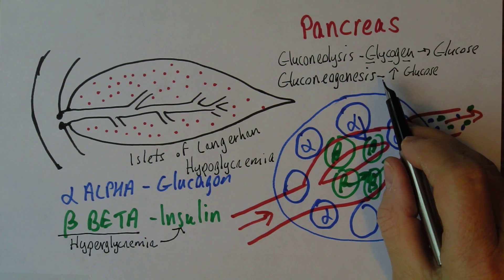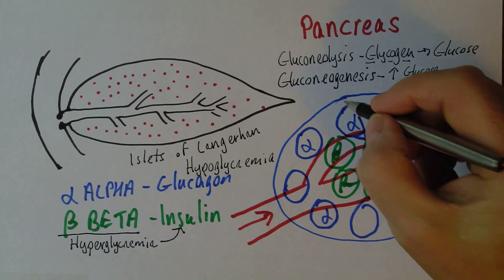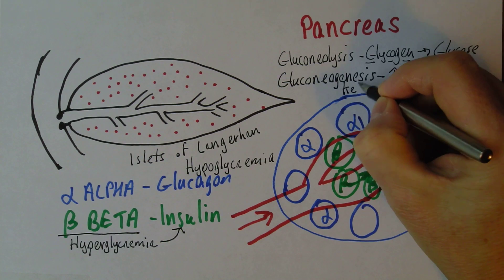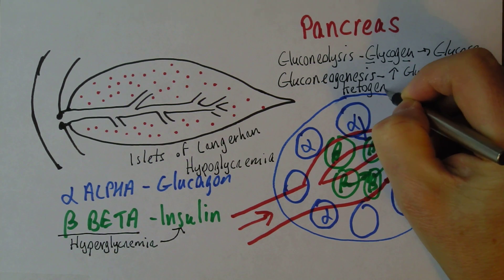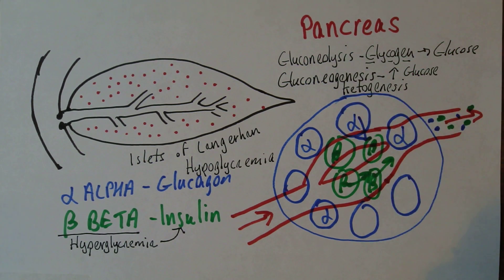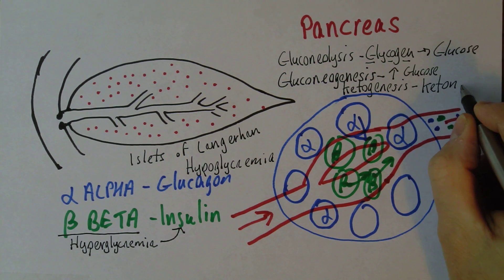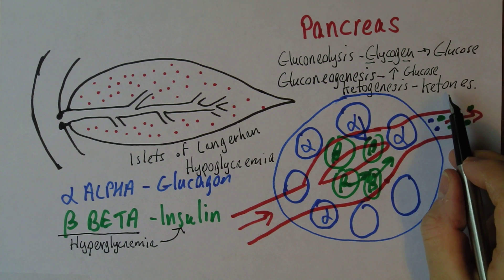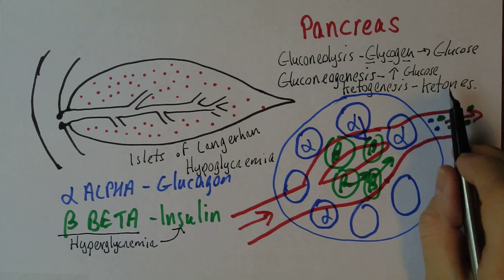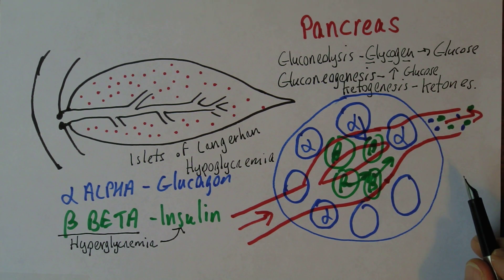And there is another process that glucagon can stimulate. That's called ketogenesis, where the liver cells, mostly the liver cells, are stimulated by glucagon to produce ketones, which is the body's emergency fuel supply.